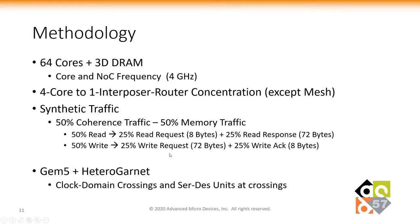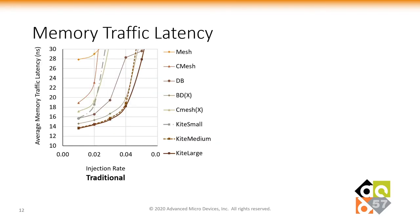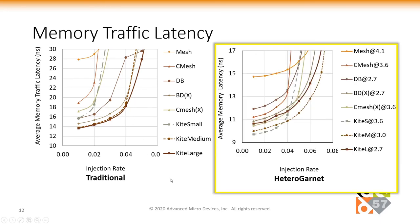To evaluate these topologies, we use the HeteroGarnet simulator and introduce synthetic traffic into the NOI. We use a workload which stresses both memory-bound and coherency traffic flows, and we use clock domain crossings and serializer-deserializer units to synchronize packets across the chiplet-interposer boundaries. For memory-bound traffic, using a traditional network simulator, we see that Mesh and CMesh suffer from high average latencies even at low injection rates. Topologies such as Butter Donut, Kite Medium, and Kite Large take advantage of long links and provide low latency. Overall, Kite Large reduces average latency by 1% while improving the saturating load by 8% over Butter Donut.